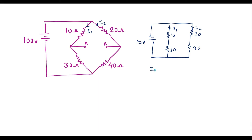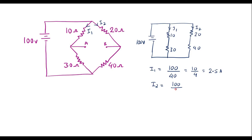I can write I1 is equal to 100 divided by the sum of 10 and 30, that is 40, which is 10 by 4, equal to 2.5 amps. Similarly, I2 is equal to 100 divided by 60, that is 10 by 6, which is equal to 1.667 amps.